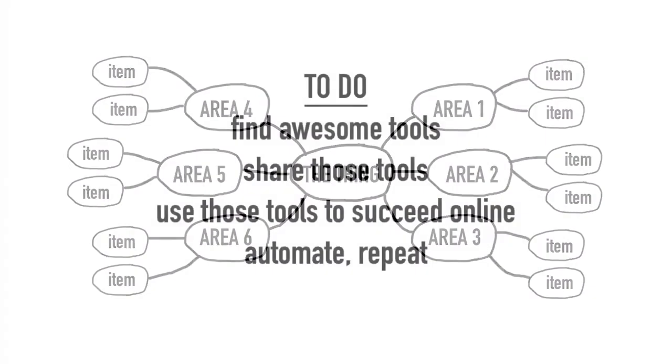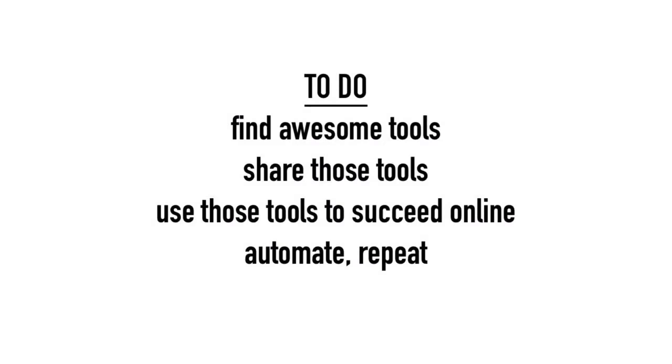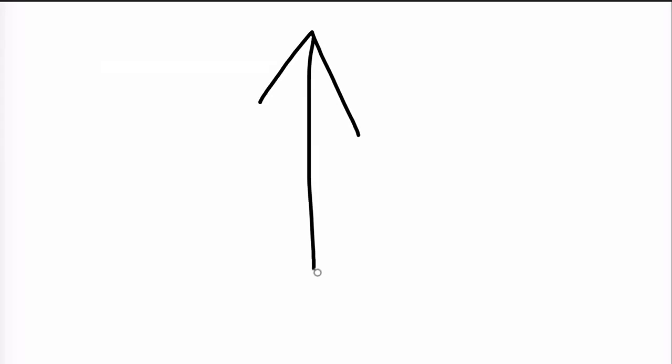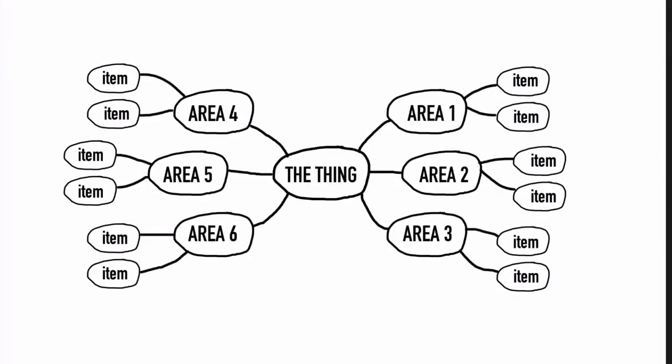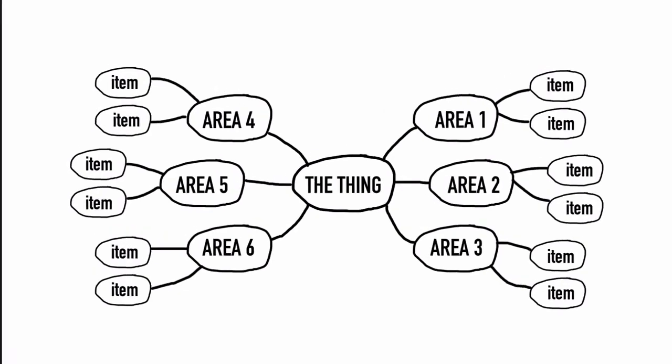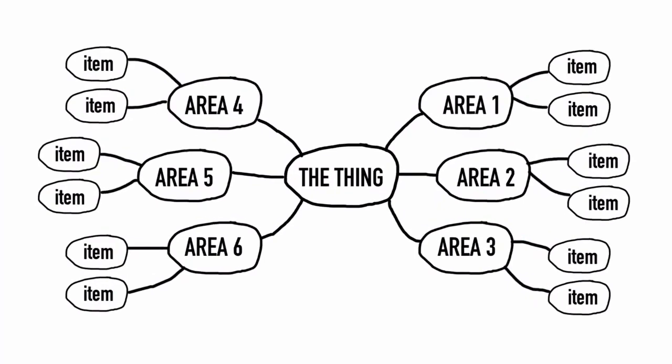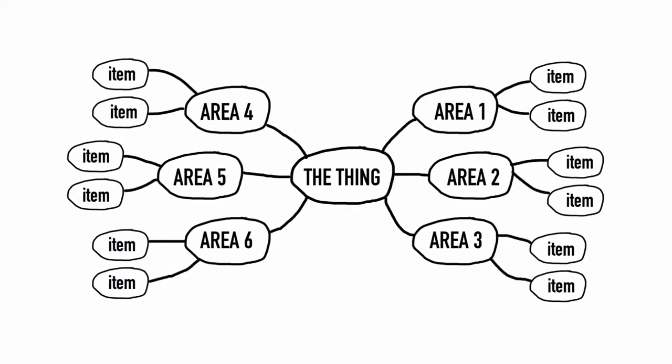You can see the difference between a mind map and a to-do list. When you create a to-do list you're writing in a linear process, but your thoughts are not linear. The whole point of mind mapping is that you don't lose any of those thoughts — you can capture them quickly by simply adding a thought to the corresponding area or category. This is why mind mapping is very effective.